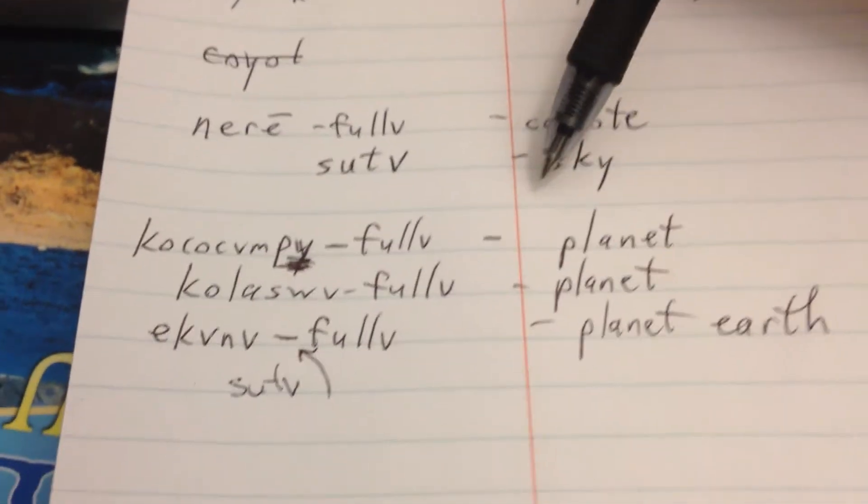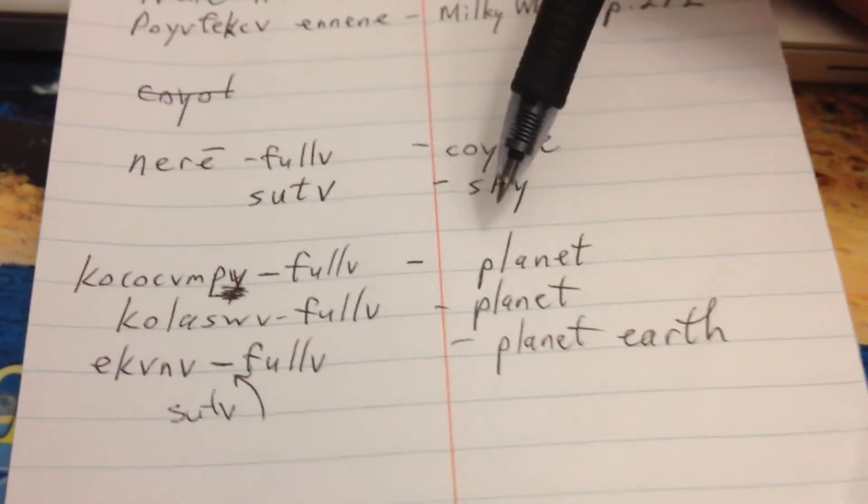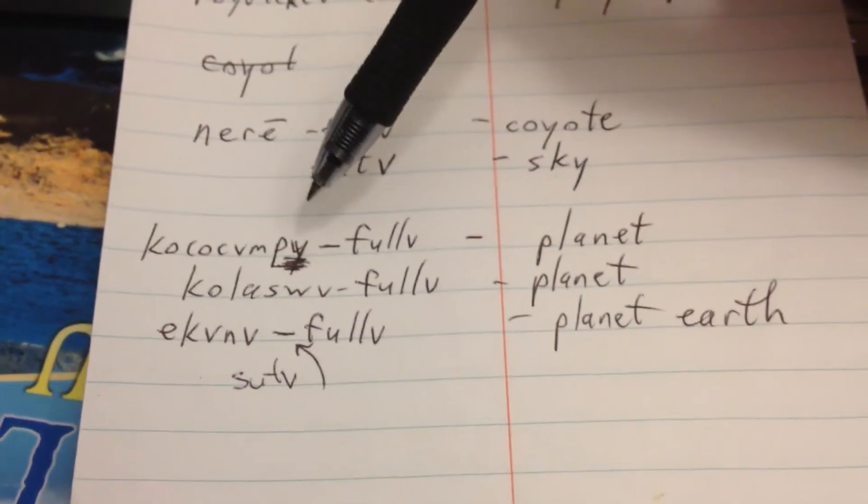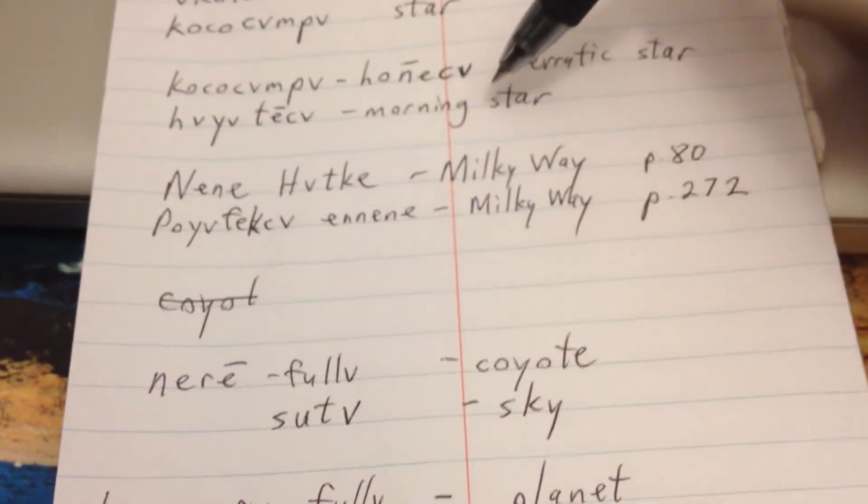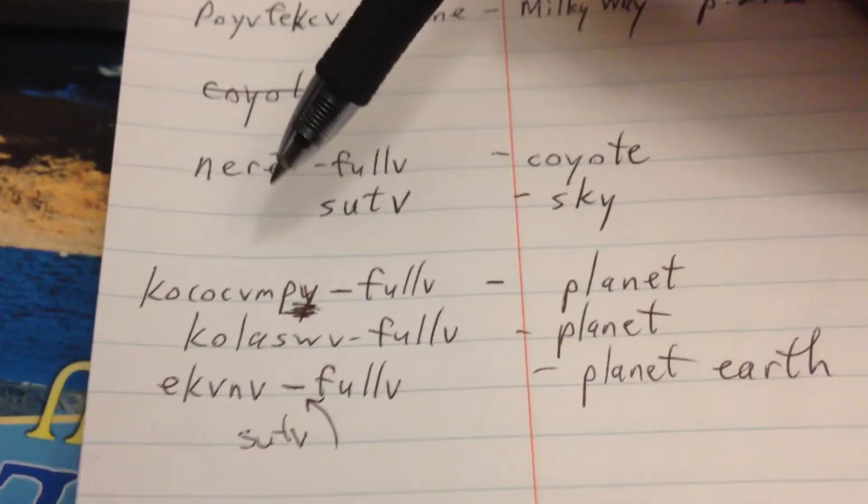And this got me thinking of some terms to refer to the word planet in Muscogee. If the other above term, this one up here, kojachumpa honicha, if that's not the word for planet, I thought of some others.